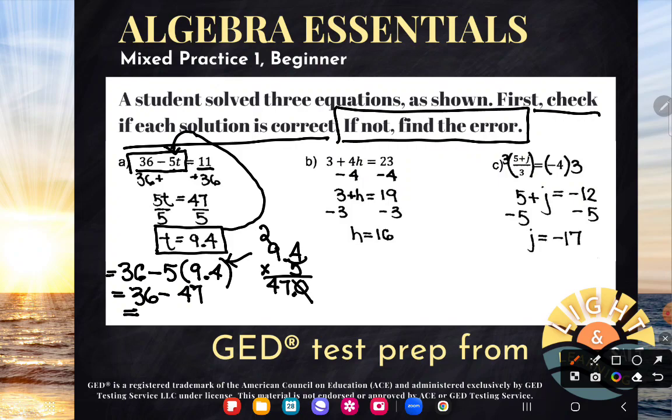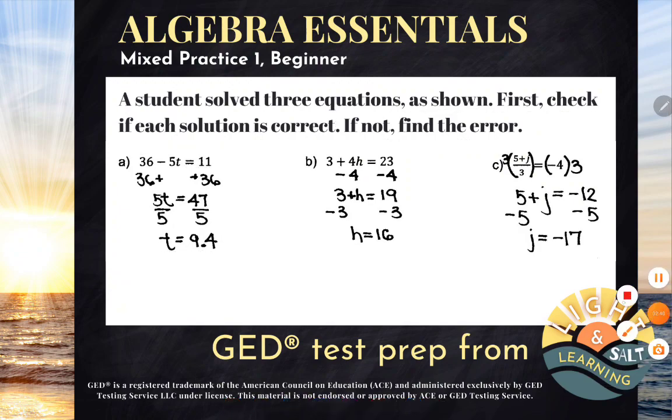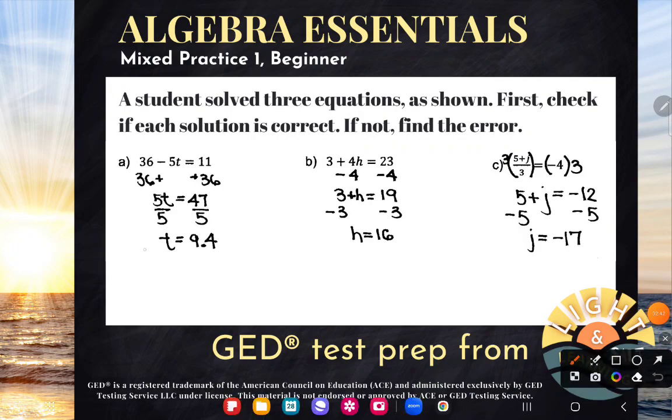And once again, you don't have to know how to do this by hand. You can do it in your calculator. But 36 minus 47, I'm taking away more than I have, so I'm going to end up negative, negative 11. So when I simplified the left hand side, did it give me 11? No, it did not. It gave me negative 11. Which means is this guy a solution? It sure is not. So is the solution correct? No, it's incorrect.